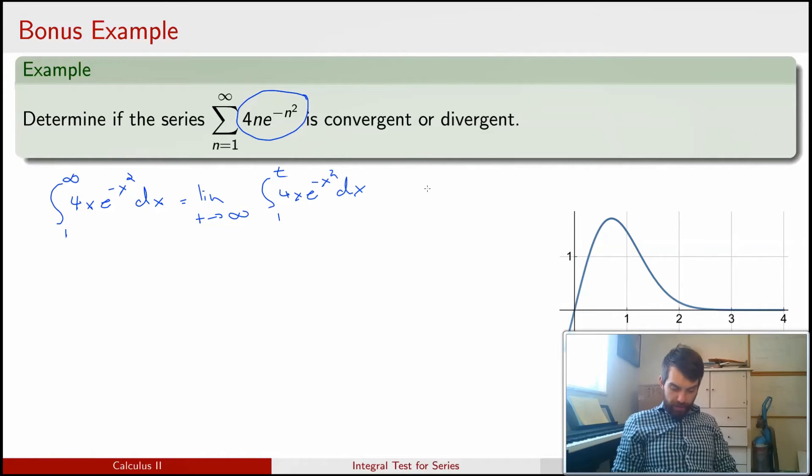So if I do a little bit of a u-substitution, maybe I'm going to say that u equals x squared. That means that du equals 2x dx. If x equals 1, that implies that u equals 1. And if x equals t, that implies that u equals t squared.